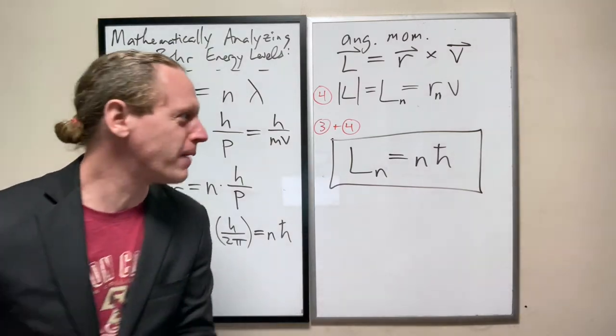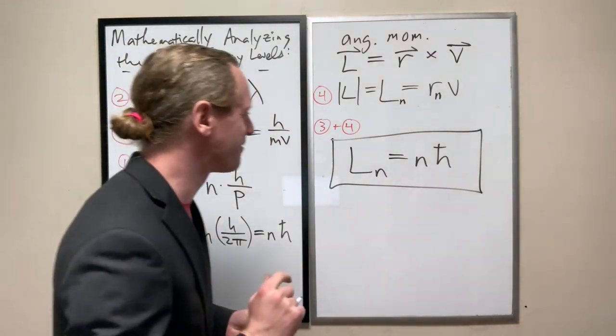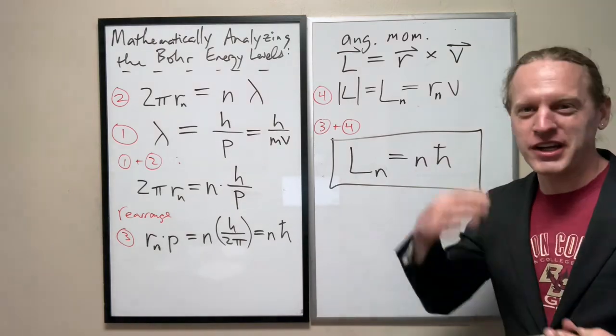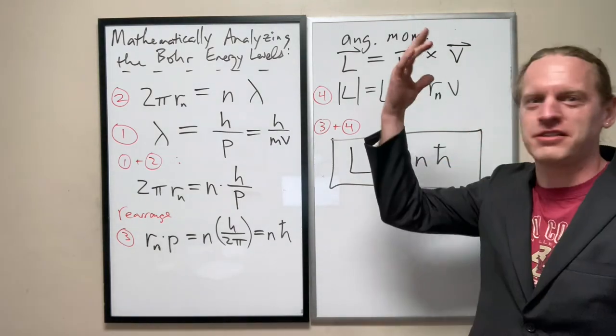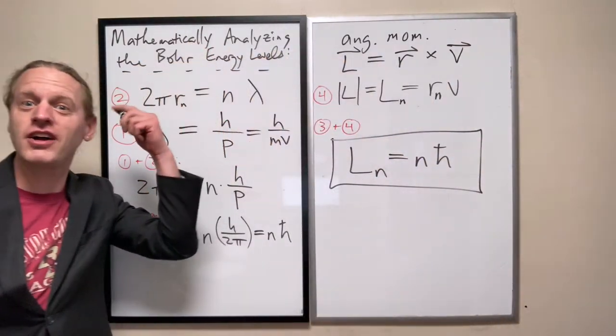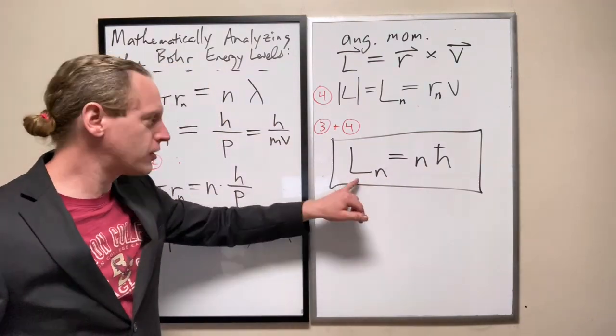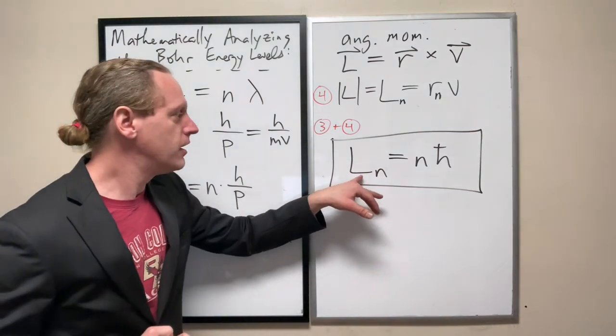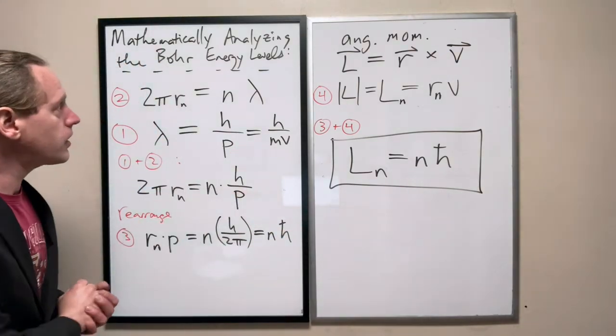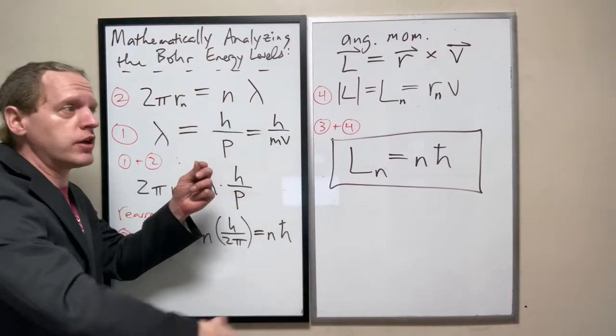Because everything that I've just told you about how Bohr developed his model has been in exactly the reverse order from what he actually did. And I didn't want to let on to that at first. This is, in fact, what Bohr started from. And I kind of dislike how the majority of textbooks do this because they try to replay the historical order, which I think is just bass-ackwards, to quote my graduate professor. If you start with this assumption, you can reproduce everything we've just done. But I like the way of doing it first, assuming de Broglie.